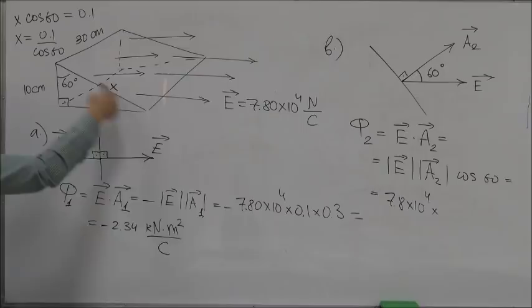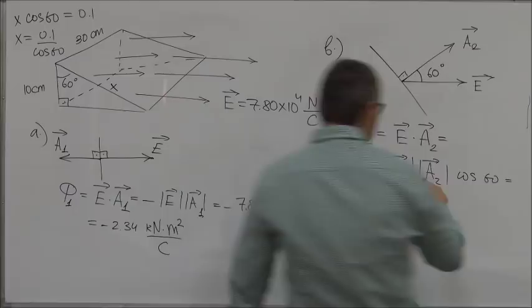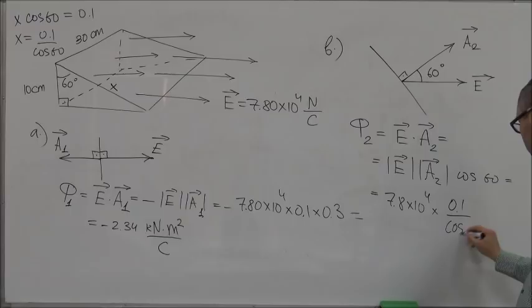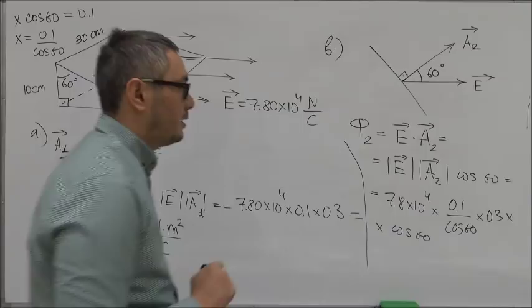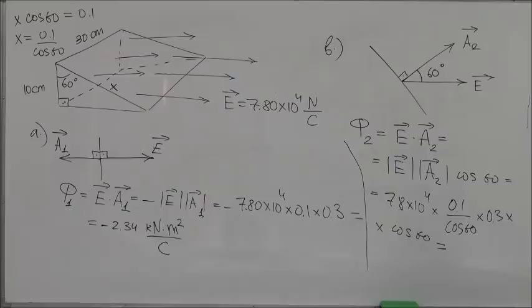So area 2 is equal to 0.1 over cosine of 60 multiplied by 0.3, that other side, times cosine of 60 from here.